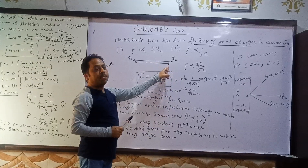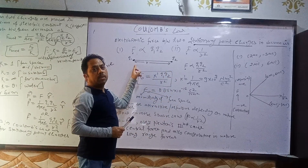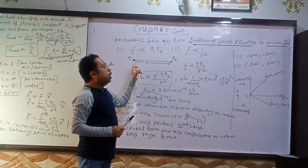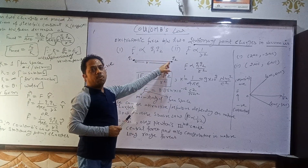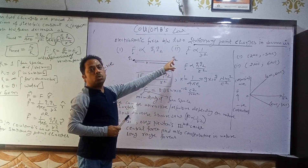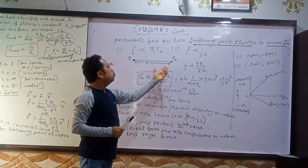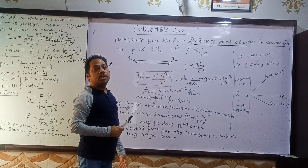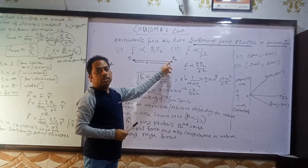If there are two stationary point charges q1 and q2 separated by some distance apart. Now, why they are referred to as point charges? When the size of these two charged bodies q1 and q2 is very small compared to the separation between them, then they are referred to as point charges.